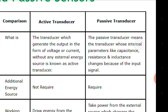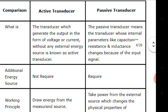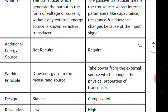In the case of a passive transducer, the transducer's internal parameters like capacitance, resistance, and inductance change because of the input signal, and they require an additional energy source. Whereas the active transducer does not require an additional energy source.